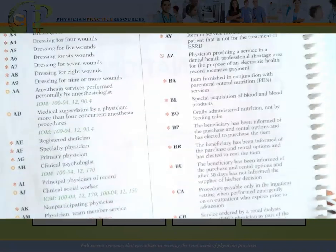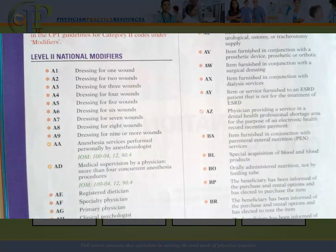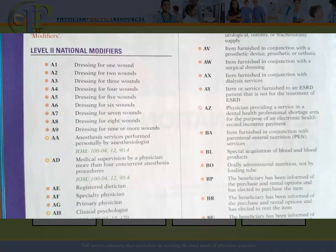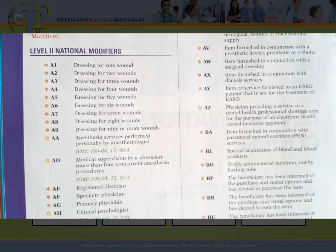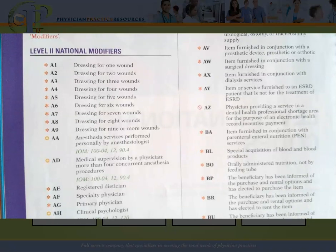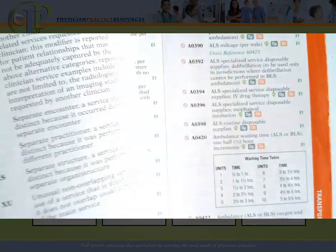The next thing you're going to see are the HCPCS Level 2 modifiers, and there are a lot of them. Of note, on national exams you generally don't have a lot of HCPCS questions — for example, on the CPC exam you may have five or six questions. It's very important to get those correct by knowing how to use your manual. Some of these modifiers you actually saw in the CPT manual, such as RT and LT, which are anatomical modifiers but are also HCPCS modifiers.